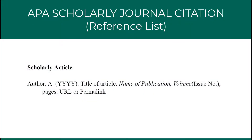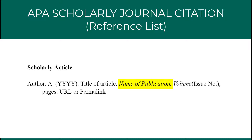Now let's look at the template for citing scholarly articles. Begin with the author's last name, followed by a comma, followed by the first initial of the author's first name, followed by a period. Then, in parentheses, place the year in which the article was published. The closed parentheses will be followed by a period. Then, format the title of the article in sentence case — the first letter of the first word is capitalized only, and remaining words are lowercase unless a proper noun or following a colon. This is followed by a period. The next element is the name of the publication, italicized and formatted in title case. APA defines major words as nouns, verbs, linking verbs, adjectives, adverbs, pronouns, and all words of four letters or more.